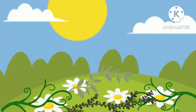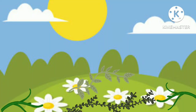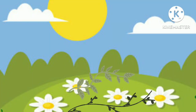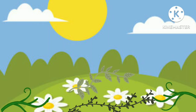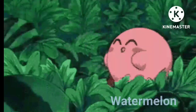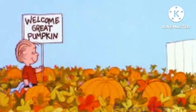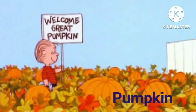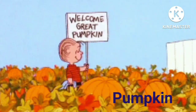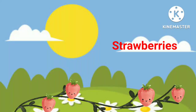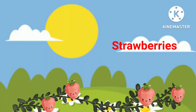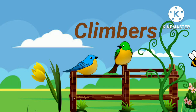Creepers. Creepers are small plants with delicate stems that grow along the ground. Watermelon, pumpkin, and strawberries are some examples of creepers.